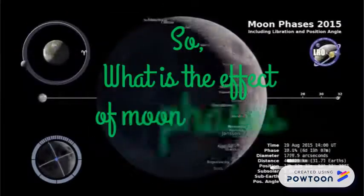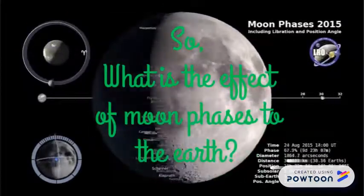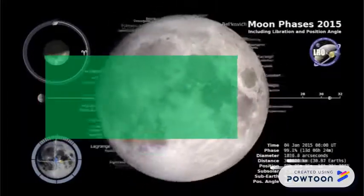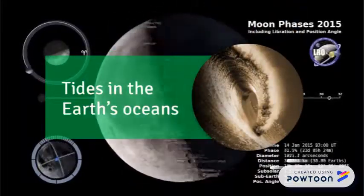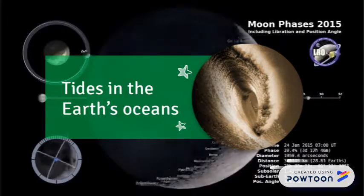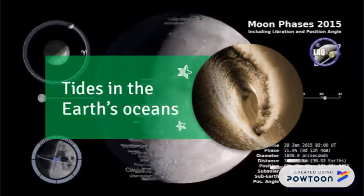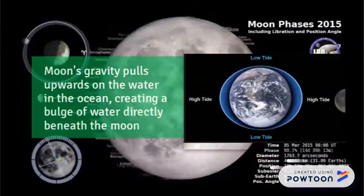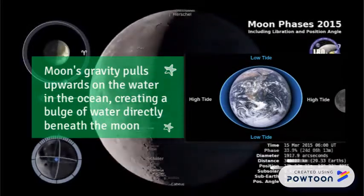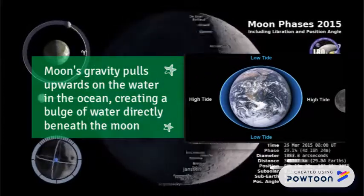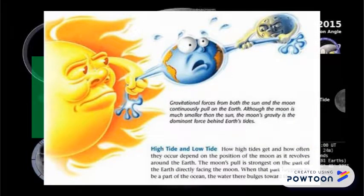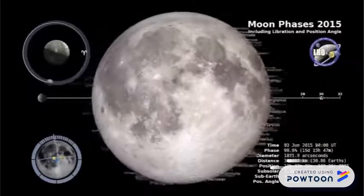So what is the effect of moon phases on the earth? It causes tides in the earth's oceans. The moon's gravity pulls upward on the water in the ocean, creating a bulge of water directly beneath the moon. From this picture you can see the sun and the moon pulling the water on the earth.